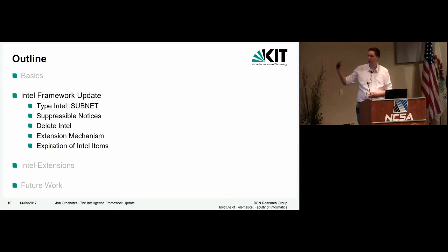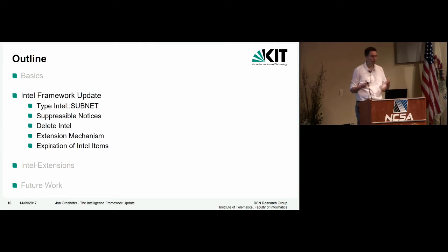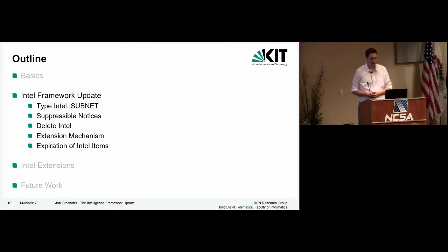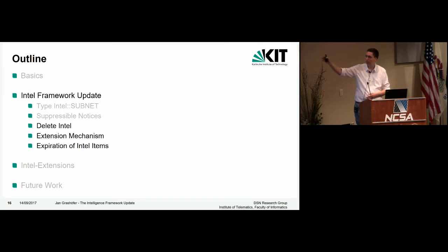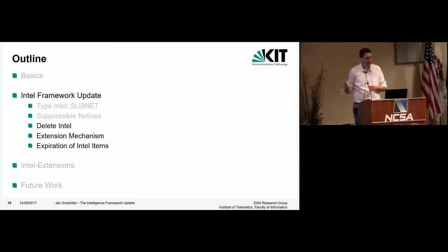Now let's look at the new functionality in the intelligence framework. There's a new intelligence type so you can now match against subnets. There are suppressible notices if you want to suppress a bunch of notices generated by intelligence sets. There is new functionality to delete intelligence items, extend the framework itself, and there is also expiration of intelligence items. I won't talk about the first two as they are rather small changes, but I will introduce the latter three and show how they can be combined in the Intel extensions.